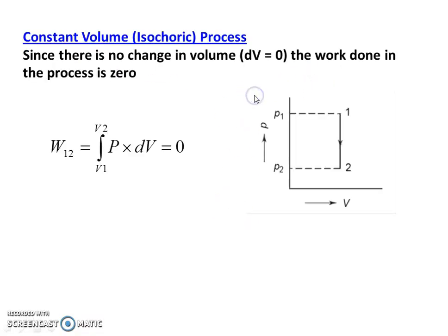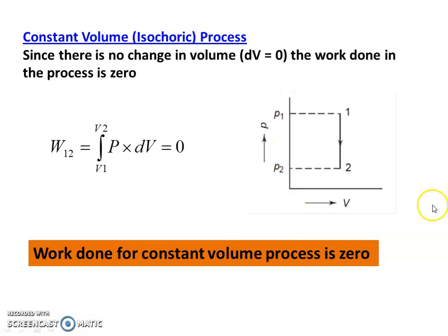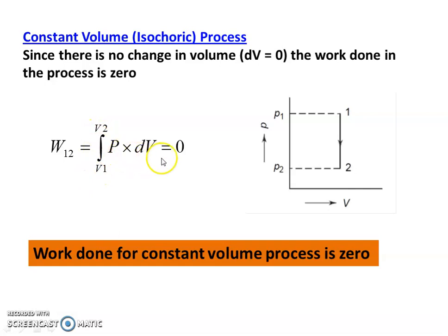Constant volume process. In the PV diagram, when there is a vertical line, the property on the x-axis is constant. V1 equals V2, so there is no change in volume; dV equals 0. The work done is W = ∫P dV = 0. Because dV equals 0, work done equals 0. The conclusion: work done for a constant volume process is 0. As a mechanical engineering student, you have to remember — work done for a constant volume process is 0.